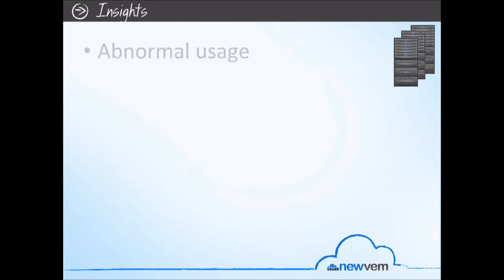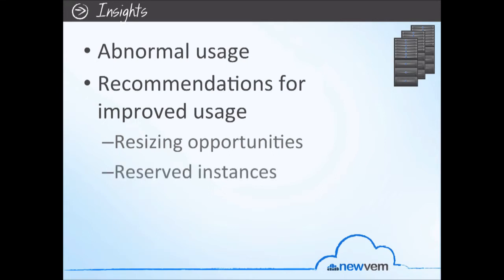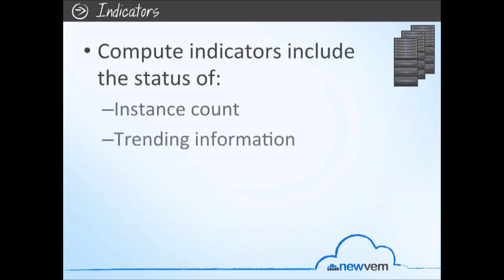Insights can include abnormal usage and recommendations for improved usage. Improved usage could be either resizing opportunities because of a lack of utilization, or if there's too much utilization, we would recommend reserved instances to save money. Within compute, indicators include the status of your instance count, trending information, details regarding CPU and IO utilization, and visibility into the status of your reserved instances.